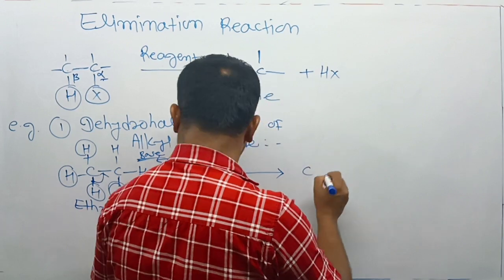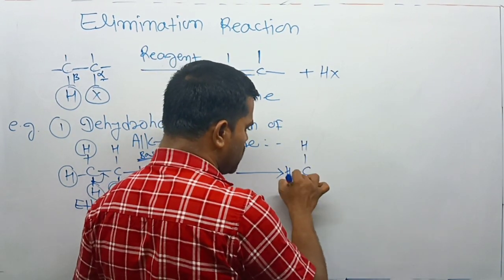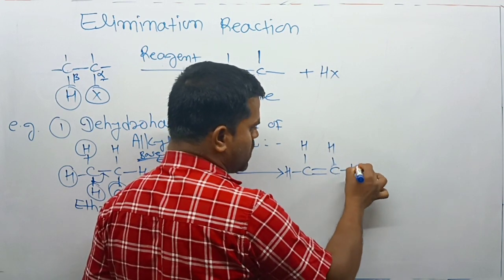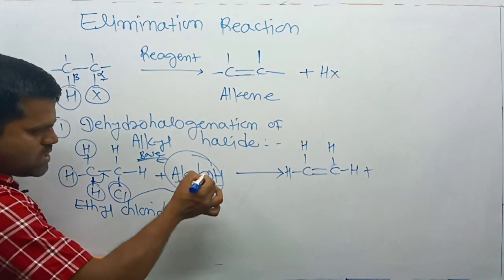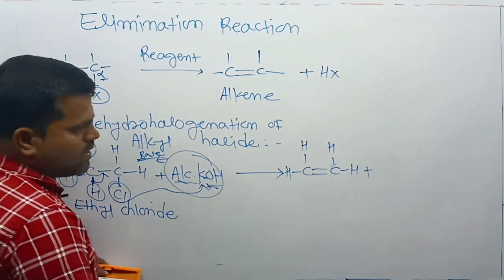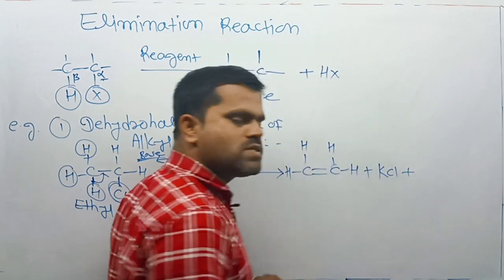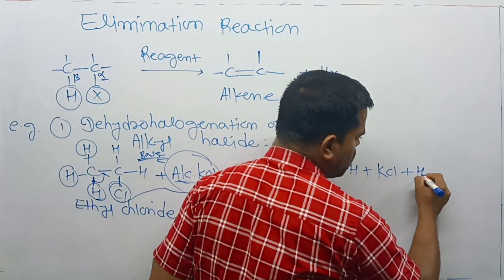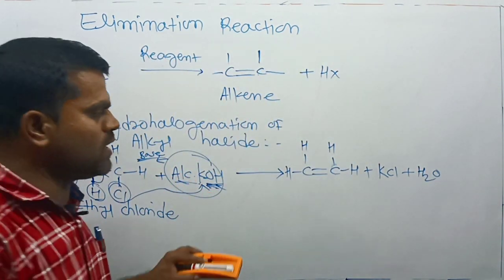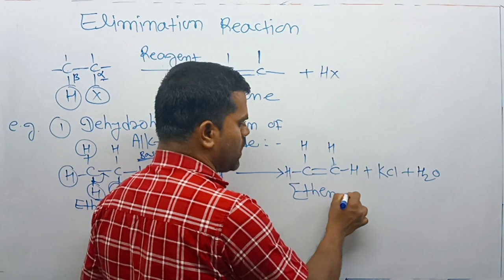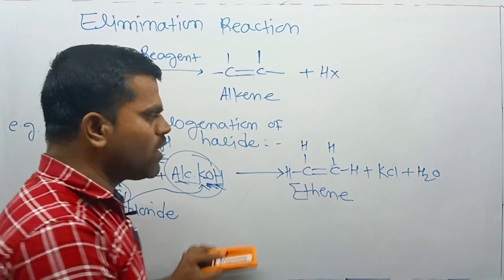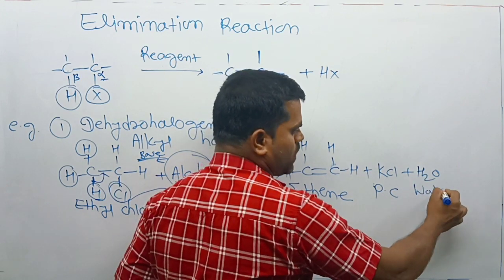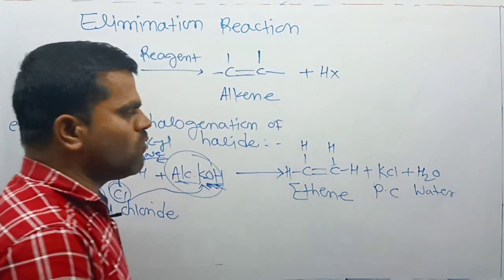The chlorine combines with potassium to produce KCl, and we get a carbon-carbon double bond — that is ethene. The remaining products are potassium chloride and water. So we get three products from this reaction.